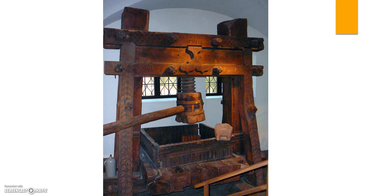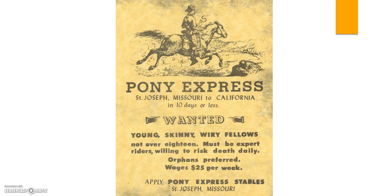There was still the problem of how to get that information out to people, because things were still moving by cart, boat, or somebody walking. There was a period in American history called the Pony Express, a service that took letters from Missouri to California. They advertised they could do it in 10 days or less — whereas now I could send an email from St. Joseph, Missouri to California in a tenth of a second. The riders had to be young and skinny to keep the horses light so they could run faster, and they got paid $25 a week, which at that time was actually a lot of money.